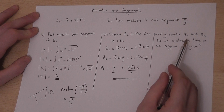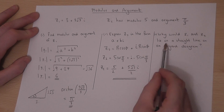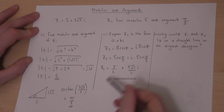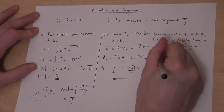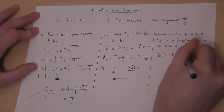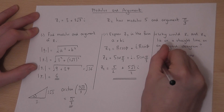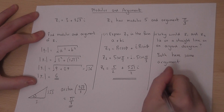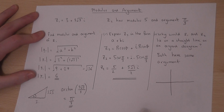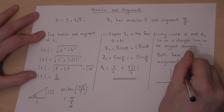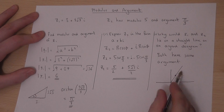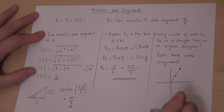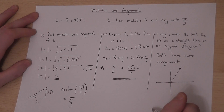In part 3, why would z1 and z2 lie on a straight line? The answer is quite simple: they both have the same angle. So if you imagine an Argand diagram, one will be over here; the other is at the same angle, just at a different distance from the origin. Hence, they lie on a straight line on an Argand diagram.